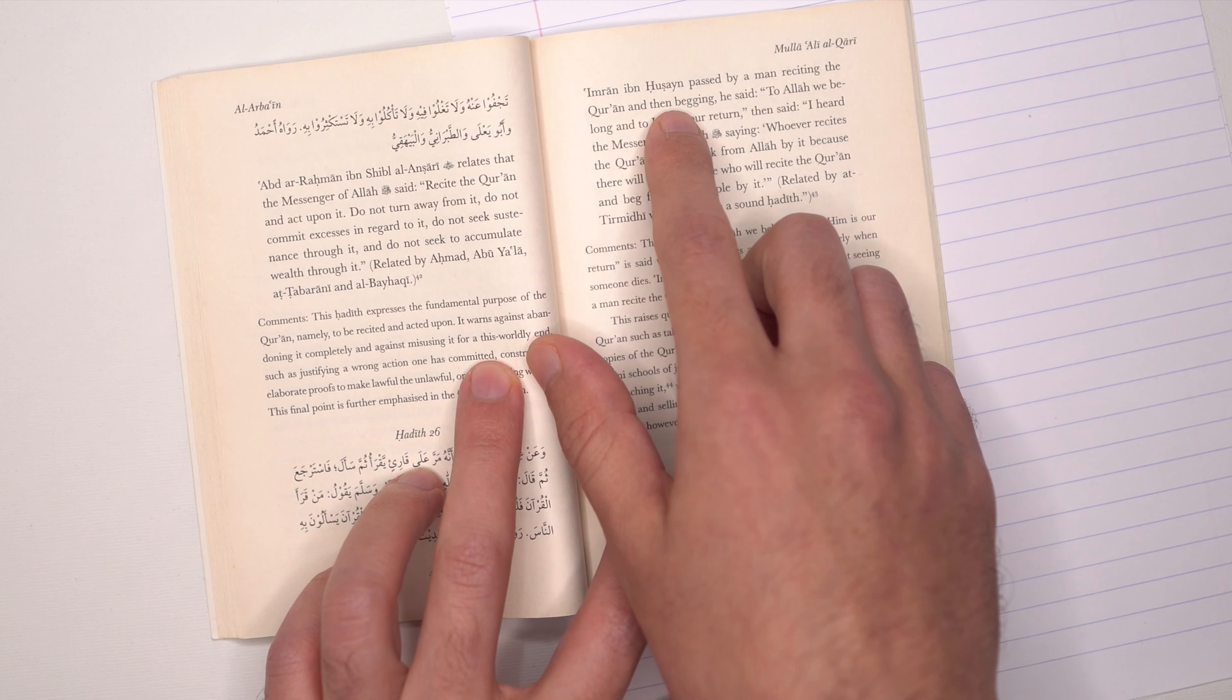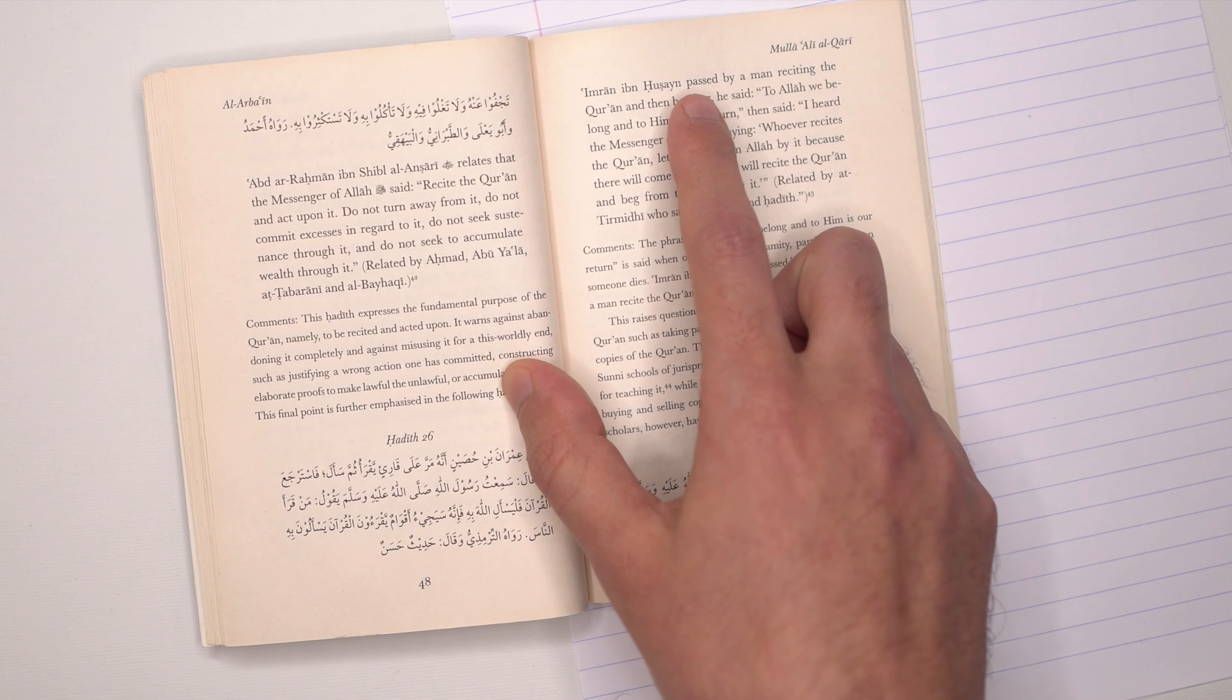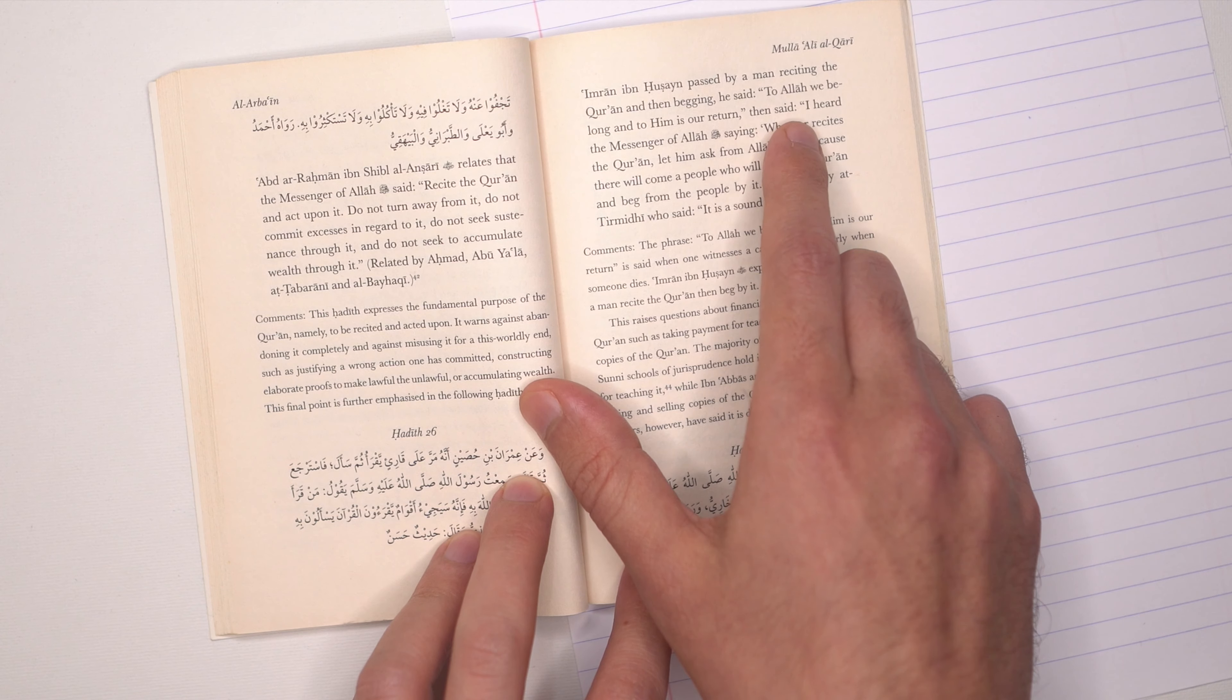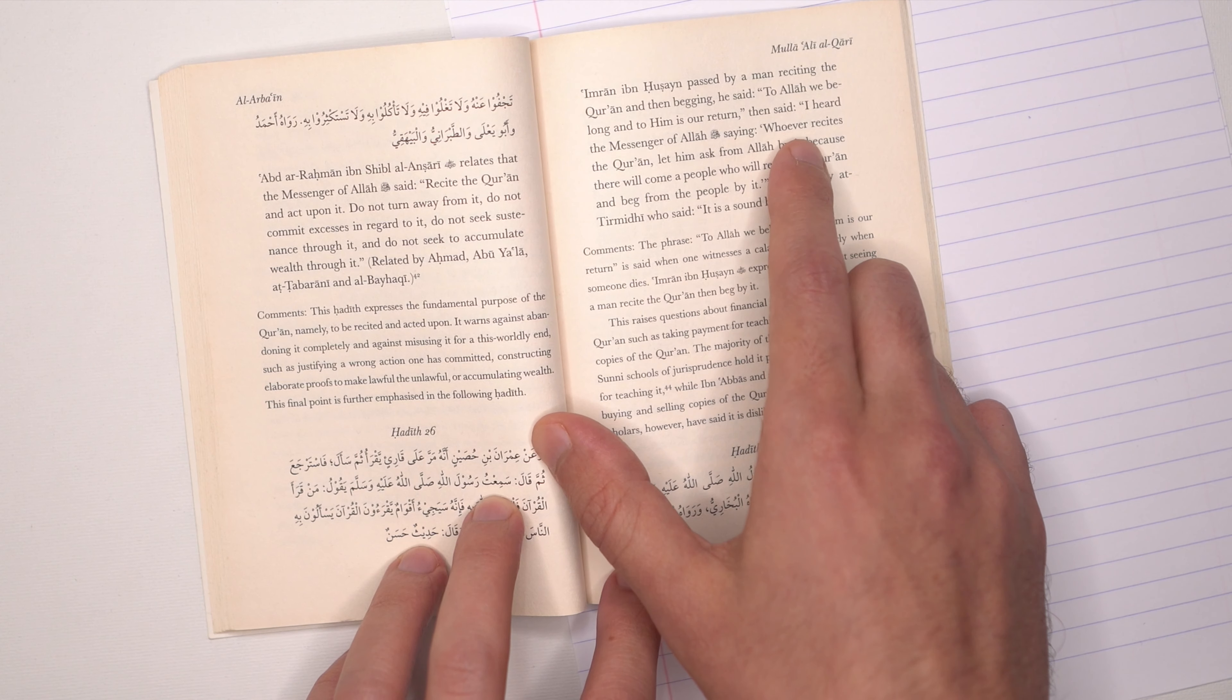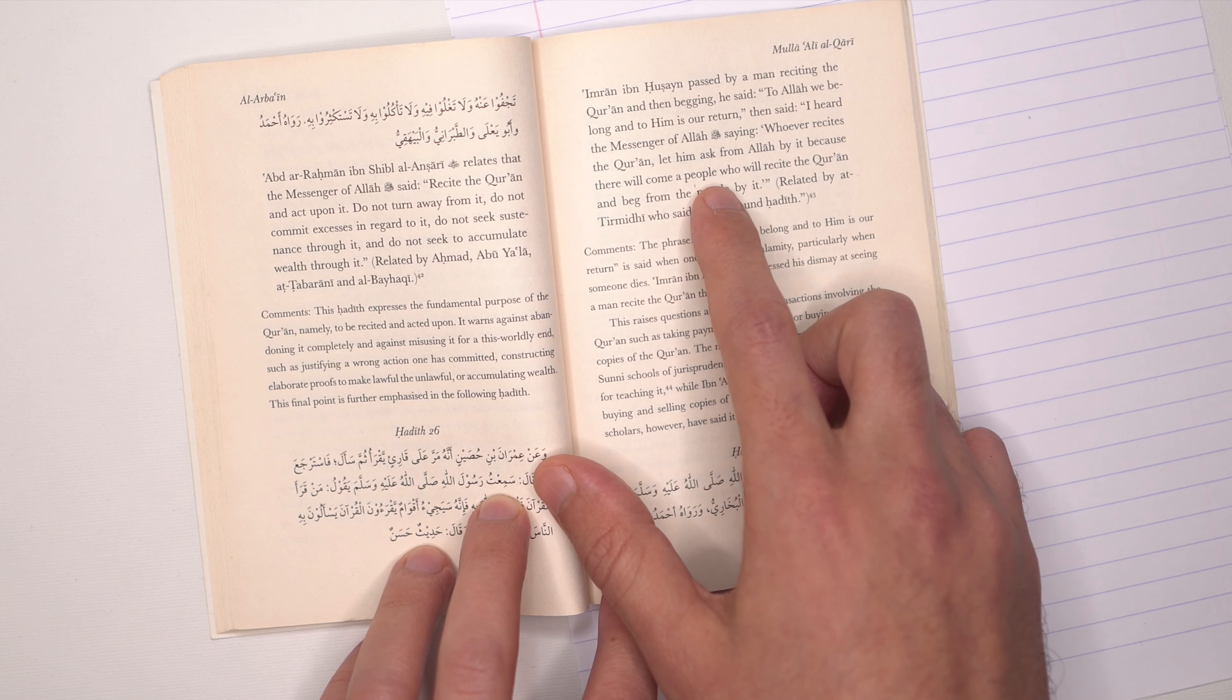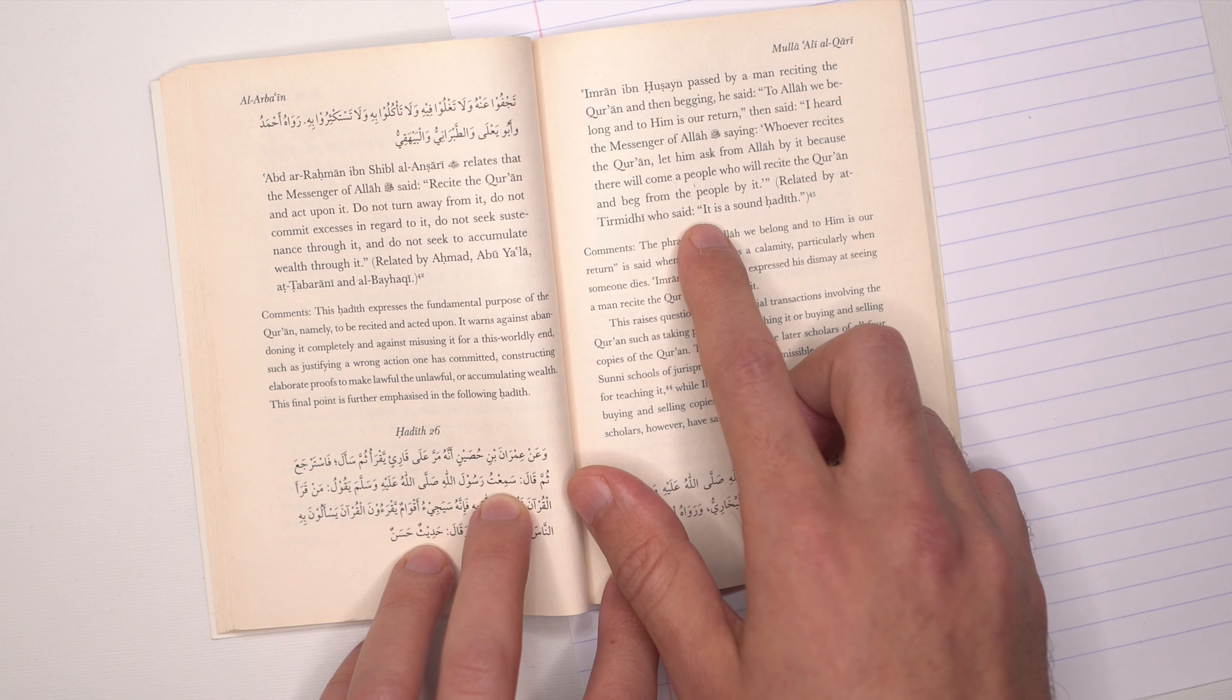Imran ibn Hussain radiyallahu anhu passed by a man reciting the Quran and then begging. He said, to Allah we belong and to Him is our return. Then he said, I heard the messenger of Allah sallallahu alayhi wa sallam saying whoever recites the Quran, let him ask from Allah by it, because there will come a people who will recite the Quran and beg from the people by it. Related by At-Tirmidhi who said it's a sound hadith.